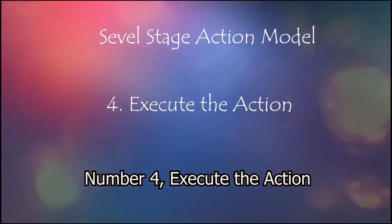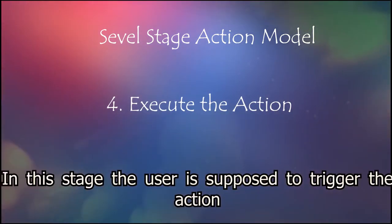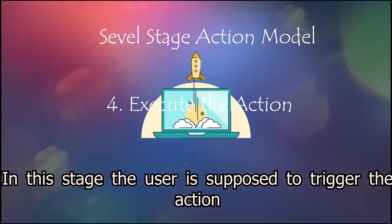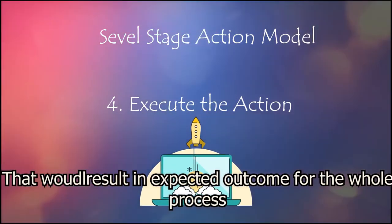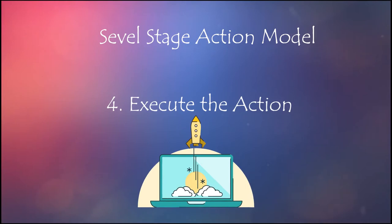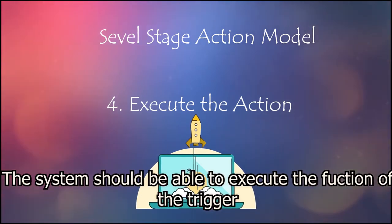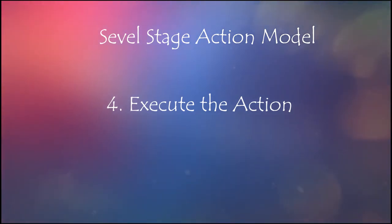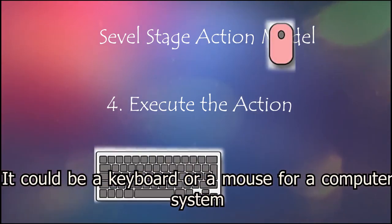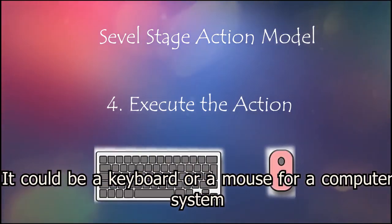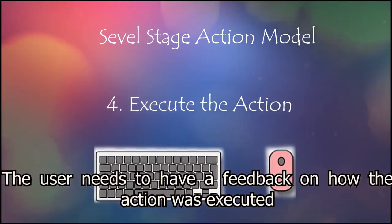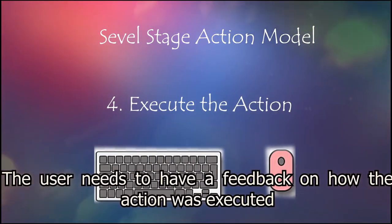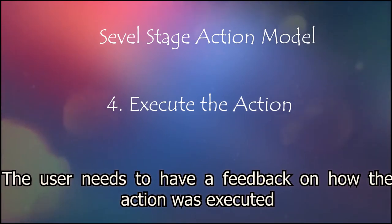Number 4: Execute the action. In this stage, the user is supposed to trigger the action that would result in the expected outcome for the whole process. The system should be able to execute the function of the trigger. It could be either through keyboard or mouse for a computer system. The user needs to have feedback on how the action was executed.